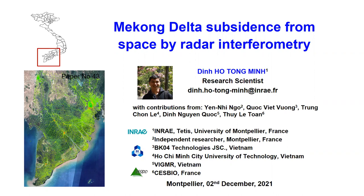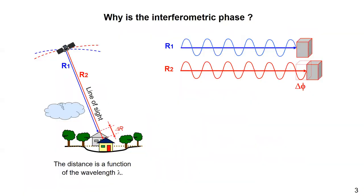The topic today is how micro deformation motion can be quantified from space by radar interferometry. Radar is a technique that allows us to measure the distance from a satellite to a target on the ground. The distance measured, R1, can be understood as the sum of many lambda wavelengths of the radar system plus a certain residue.